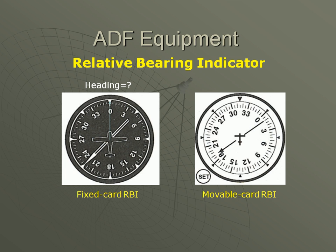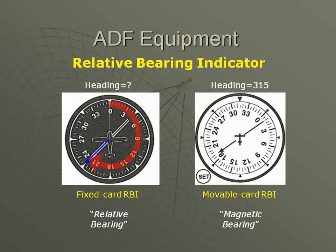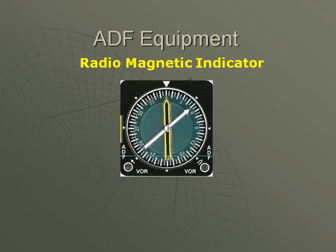This difference introduces us to two important terms. Because the numbers of a fixed card RBI are measured relative to the aircraft's nose, the needle points to a relative bearing. On the movable card, with magnetic heading at the top, the needle points to a magnetic bearing. The other major type of ADF is the radiomagnetic indicator, or RMI. An RMI functions like an automatic movable card RBI, but has two needles that can be tuned separately to different NDBs or even to VOR stations.